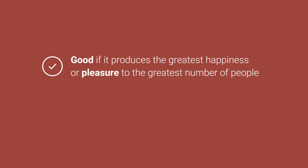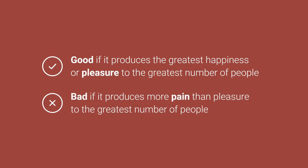As such, for utilitarianism, an act is morally good if it produces the greatest happiness or pleasure to the greatest number of people, and bad if it produces more pain than pleasure to the greatest number of people. This explains why utilitarians would not care if an action is done using dishonest means, as long as it produces maximum benefits to the greatest number of people.